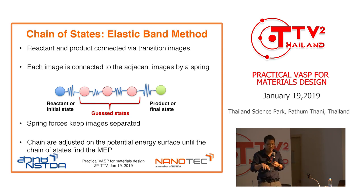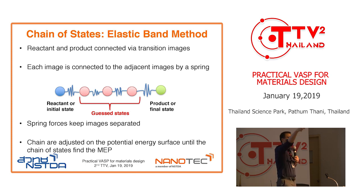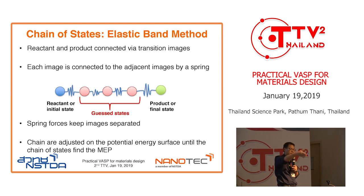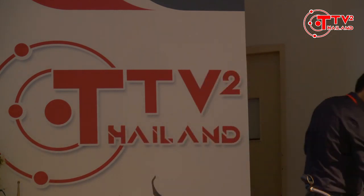Imagine closing your eyes and finding a way from one side to the other — you have a rubber band connected with ping pong balls and pull it to the other side; the ping pong balls go across. We use the same idea in the potential energy field to get the path from one side to the other. The spring force keeps the images separated, like ping pong balls connected with a rubber band. You then optimize the energy of the outer states, and when all the energy is relaxed you get the minimum energy path.